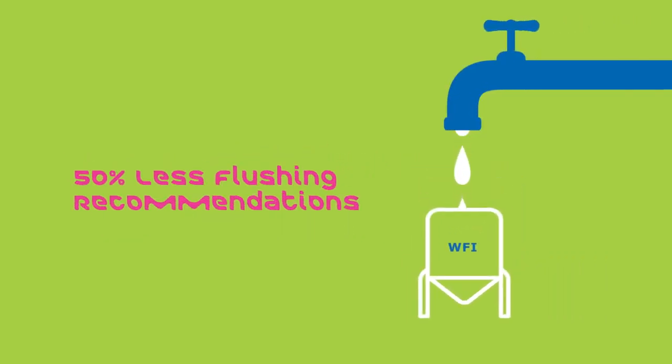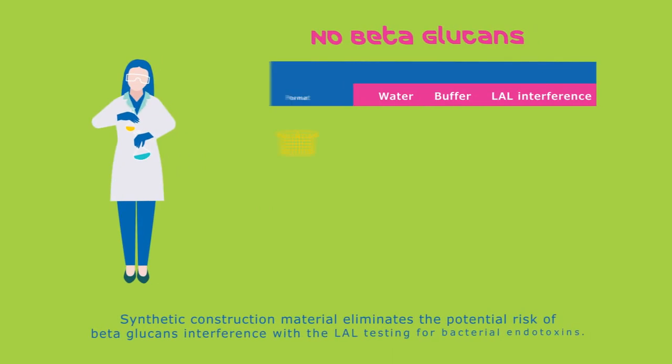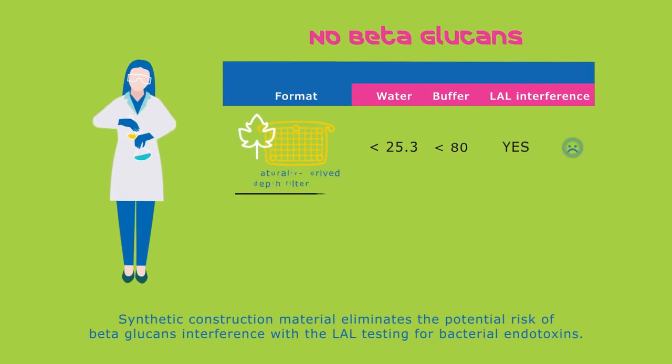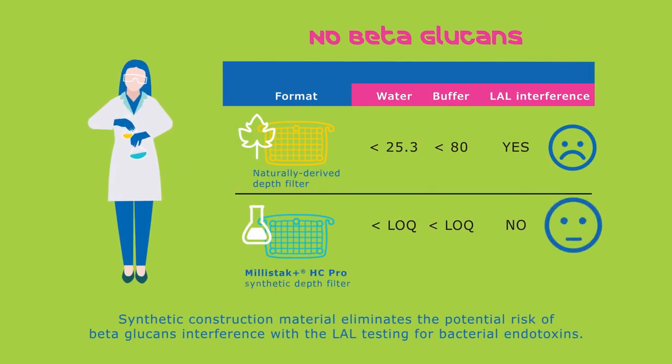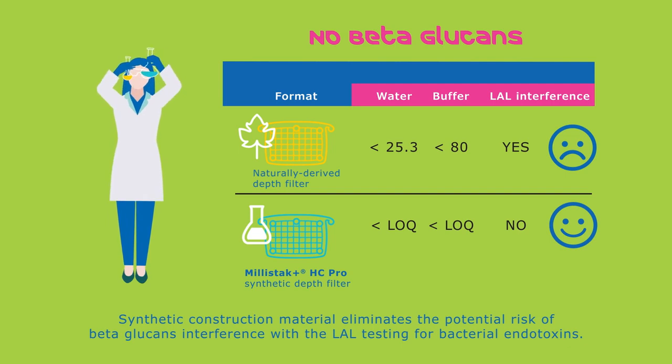Benefits include 50% less flushing recommendations. Synthetic construction material eliminates the potential risk of beta-glucans interference with the LAL testing for bacterial endotoxins.